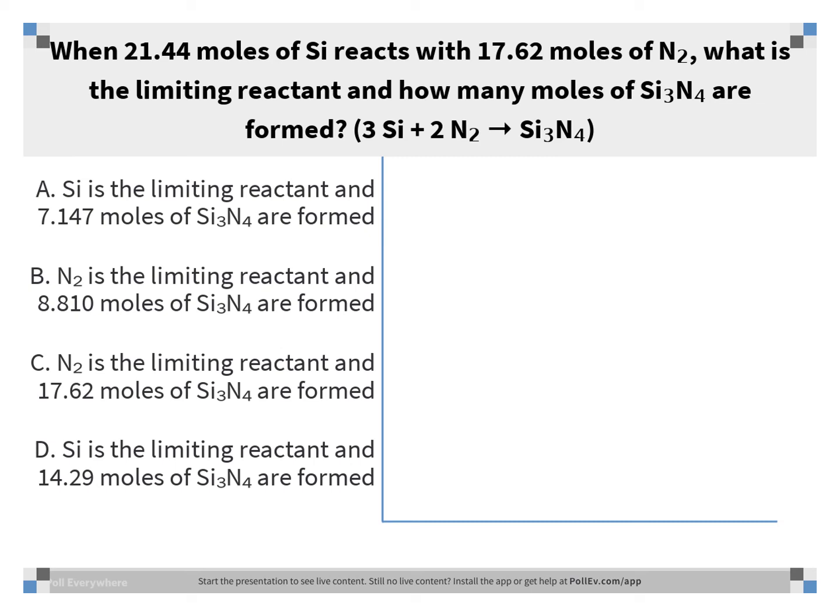We take each of our starting amounts and convert to moles of product. First, we change 21.44 moles of silicon into moles of product using coefficients from the chemical equation. There's a 3 next to silicon and a 1 next to Si3N4. We do 21.44 times 1 divided by 3 and get 7.147 moles of product able to be formed if all the silicon reacts. Then we convert 17.62 moles of nitrogen into moles of silicon nitride. There's a 2 next to nitrogen and a 1 next to silicon nitride. We do 17.62 times 1 divided by 2 and get 8.810 moles. Comparing the two, silicon gives the least amount of product — 7.147 moles — making it the limiting reactant.